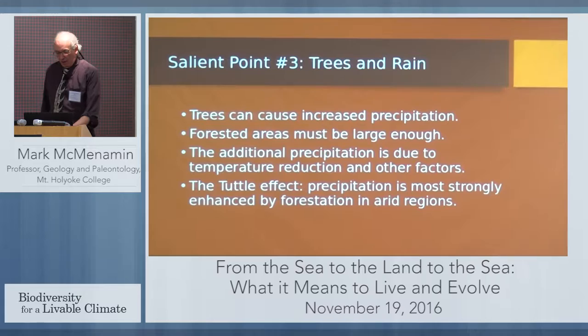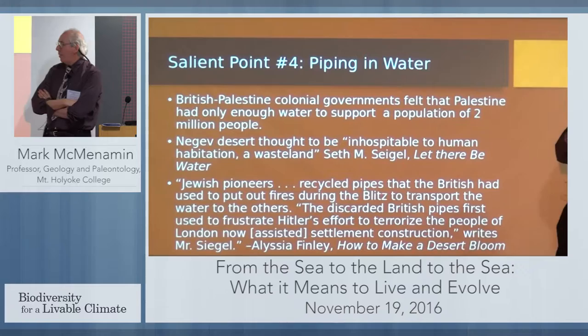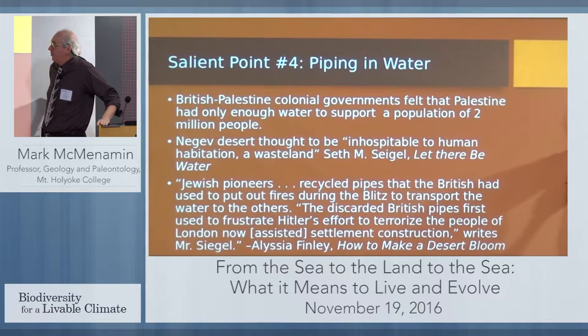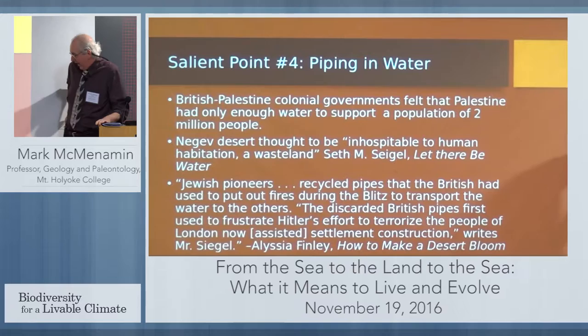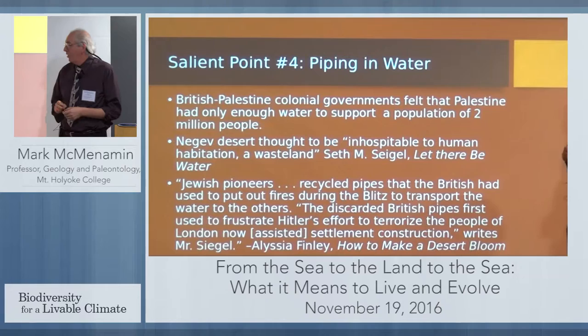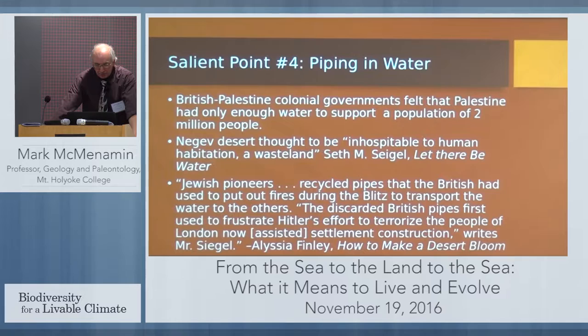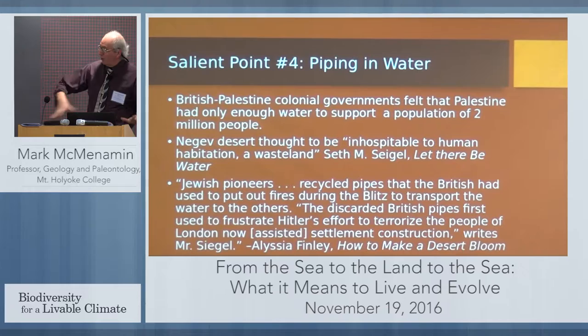Salient point number four: piping in water. The British-Palestine colonial governments felt that Palestine had only enough water to support a population of two million people; the Negev desert was thought to be inhospitable to human habitation, a wasteland, according to Seth Siegel in Let There Be Water. Jewish pioneers recycled pipes that the British had used to put out fires during the Blitz to transport water. If you can get the water to the place, you're going to do much better in terms of supporting human population.